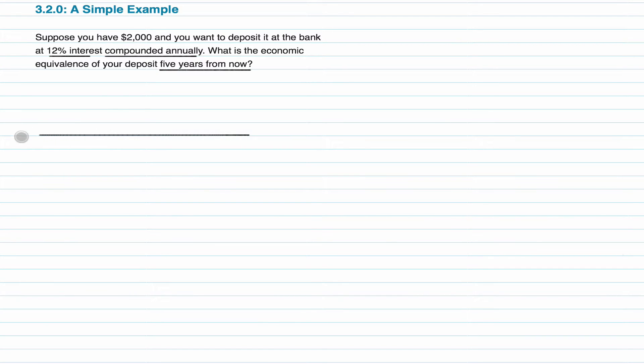So let's start by drawing out our cash flow diagram. You want to deposit $2,000 at year zero. And you want to know at 12% compounded annually, what is the equivalence of your deposit. So you just deposit $2,000 now, and you want to know how much it's worth 5 years from now. You want to take it out 5 years from now. So how much is it? So 1, 2, 3, 4, and 5. 5 years.